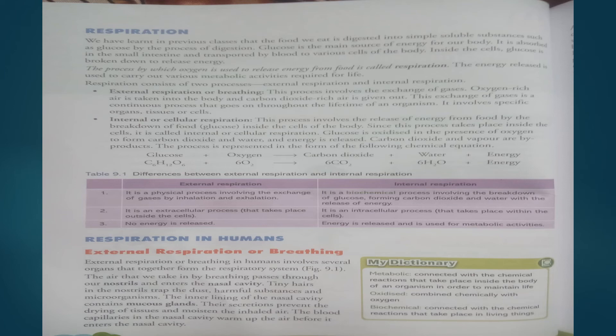We can note differences between external and internal respiration. External respiration is a process involving the exchange of gases by inhalation and exhalation, also called breathing. Internal respiration is the process of breaking down of food inside the cell in the presence of oxygen to give energy, also called cellular respiration. External respiration is an extracellular process that takes place outside the cells — that is, in the lungs — while internal respiration takes place inside the cell body. In external respiration no energy is released, but in internal respiration energy is released.